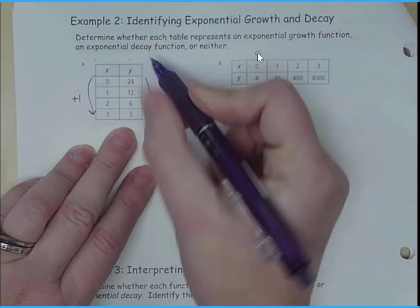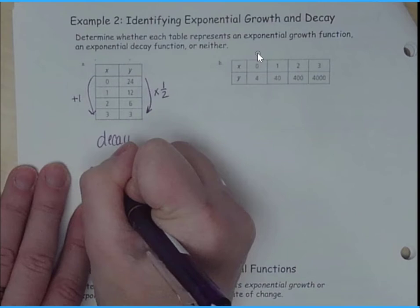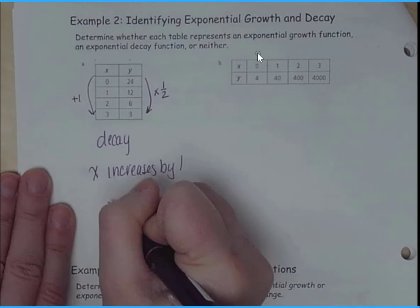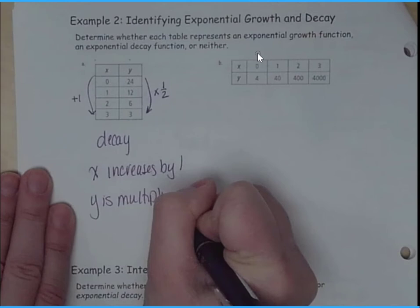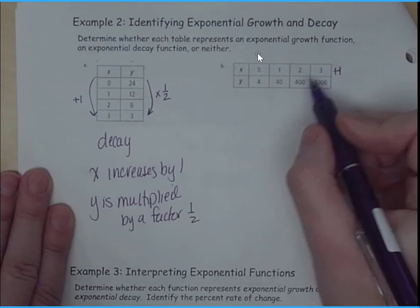So x increases by 1 and y is multiplied by a factor of 1 half. Now here, let's see, 1, 1, 1. So this is plus 1 times 10 times 10. So this is times 10. So since our y value is increasing, we know this is a growth function.